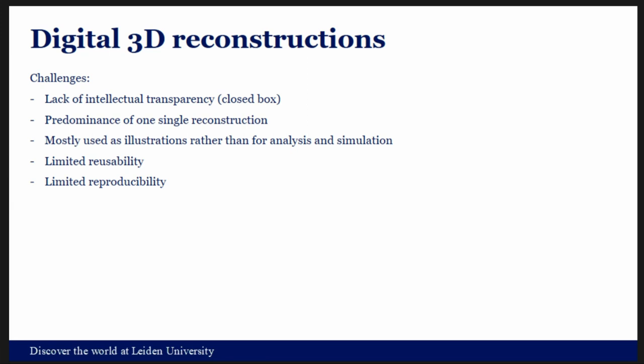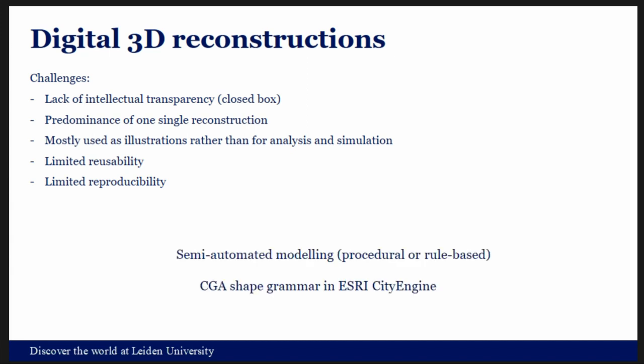There is also limited reusability of 3D models and limited reproducibility. I'm an archaeologist, not a computer graphic artist — if you give the same dataset to other people, they will produce a different 3D reconstruction from the same set of data. The solution I'm proposing is using a semi-automatic modeling approach, procedural or rule-based, and specifically the CGA shape grammar found in a commercial software called CityEngine.